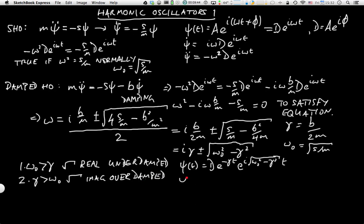In this case, ψ(t) is D e^(-γt) e^(±√(γ² - ω₀²)t). What we've done is we've reversed the sign of the square root so that the square root itself becomes real. By reversing the sign, we have to take a factor of i outside, and that's why we have the two damping terms.